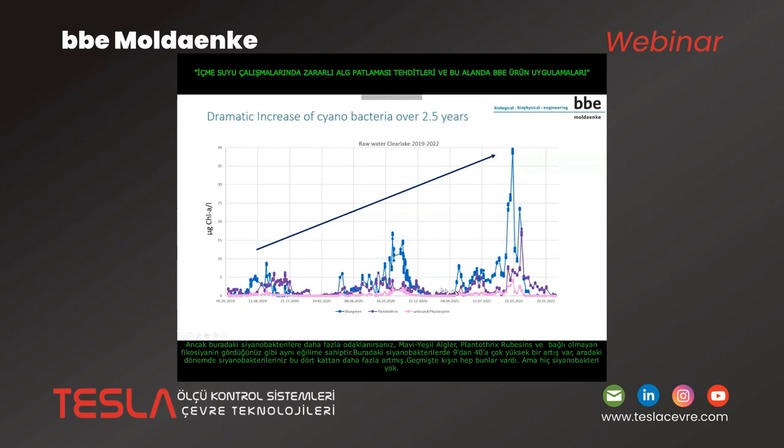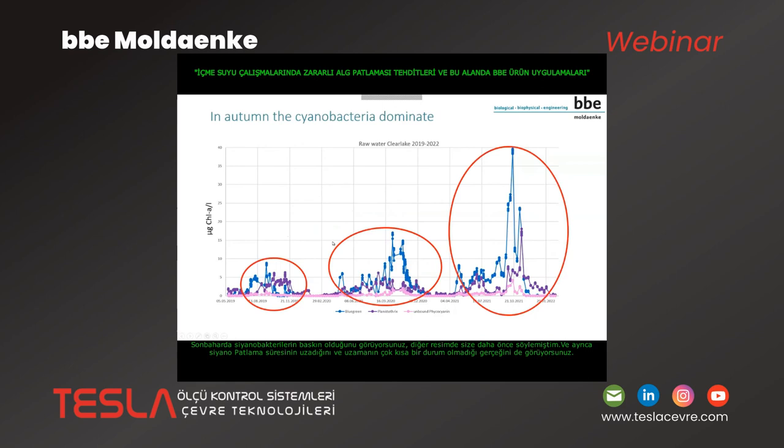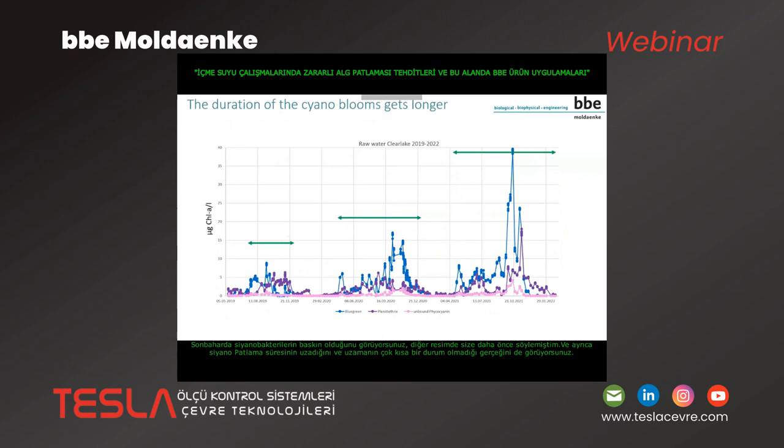During the period in between you also have cyanobacteria. In the past there was always no cyanobacteria at all in wintertime. You see that autumn is cyanobacteria-dominated, and you also see that the duration of cyanobacteria gets longer and longer — it is not a very short situation anymore; it gets longer and longer.